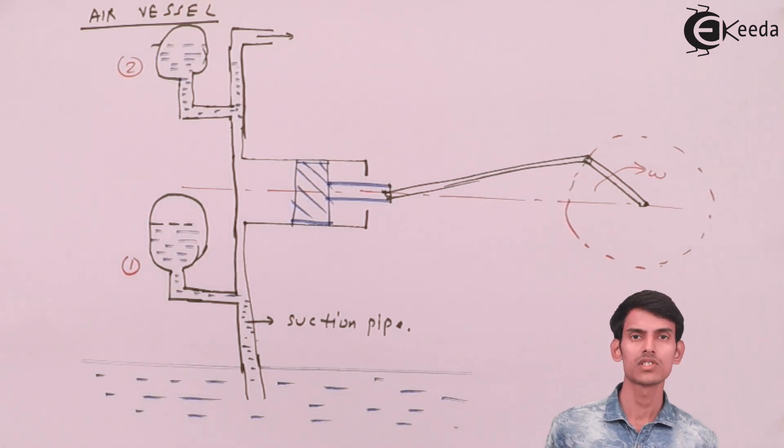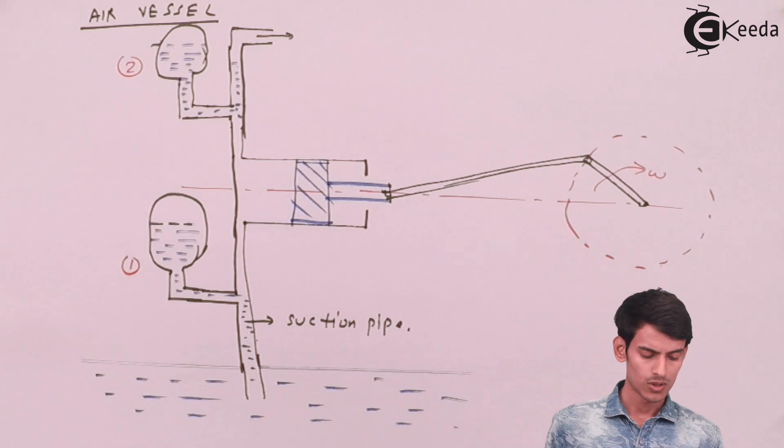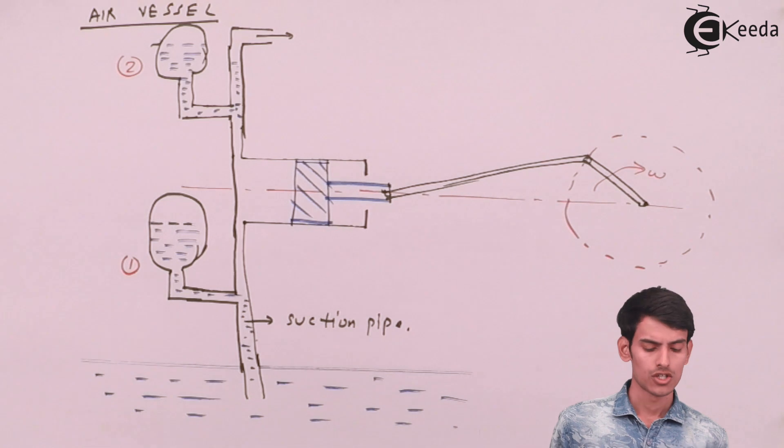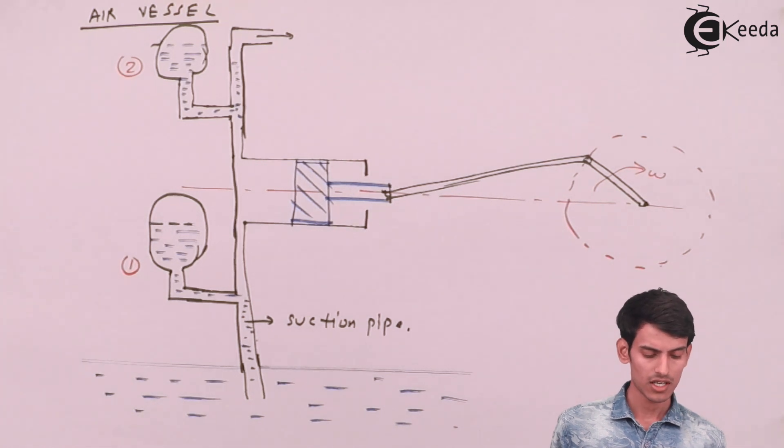These are air vessels which are initially filled with air. It is a container which is made up of a certain material like cast iron or steel, it can be anything. So it is filled with pressurized air initially.